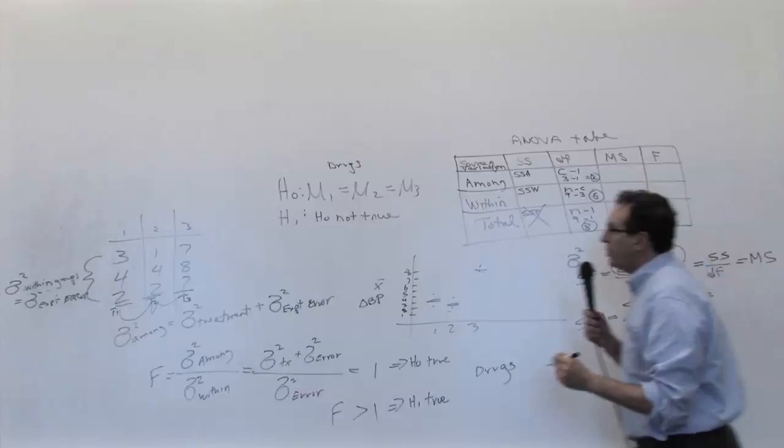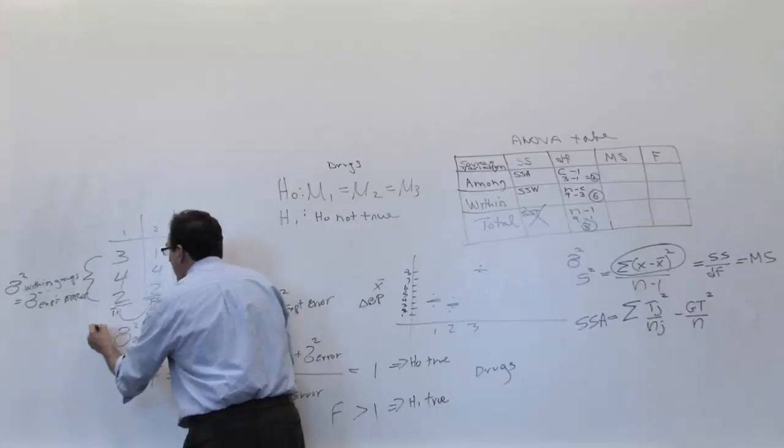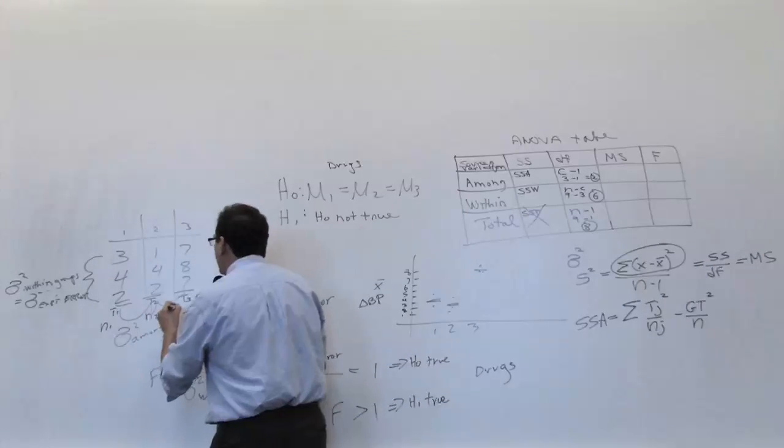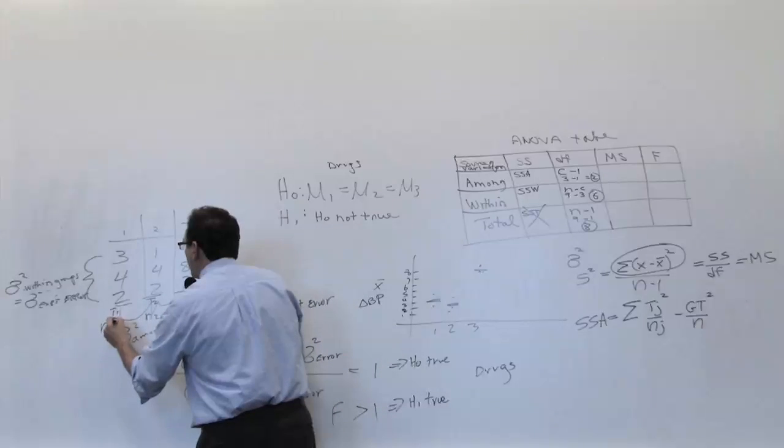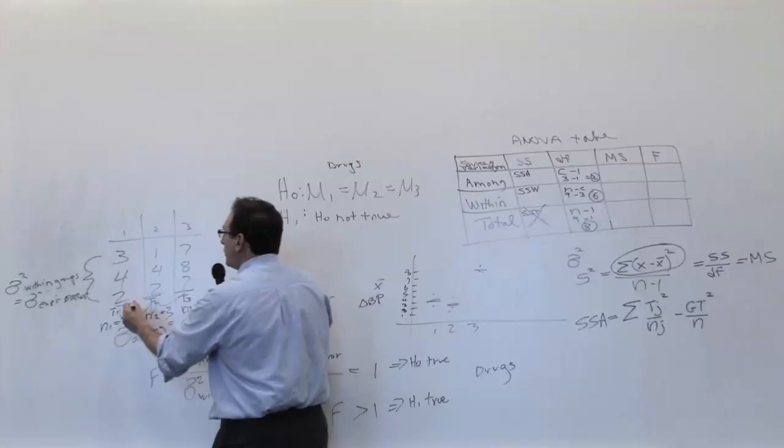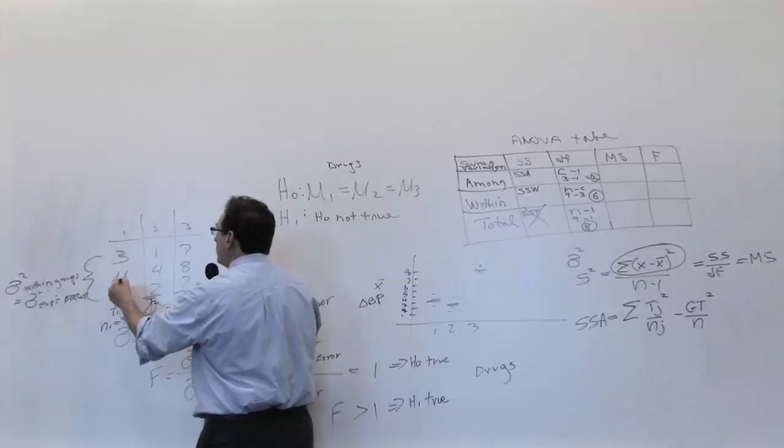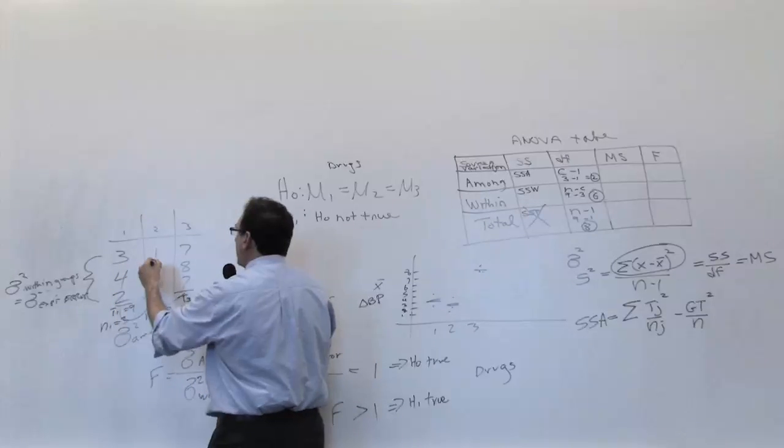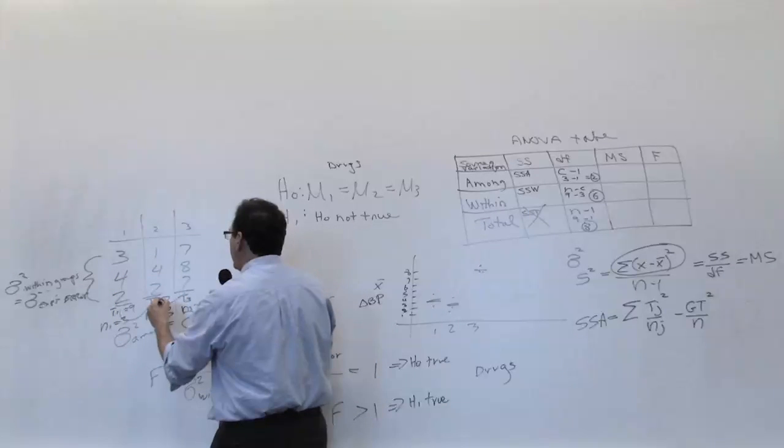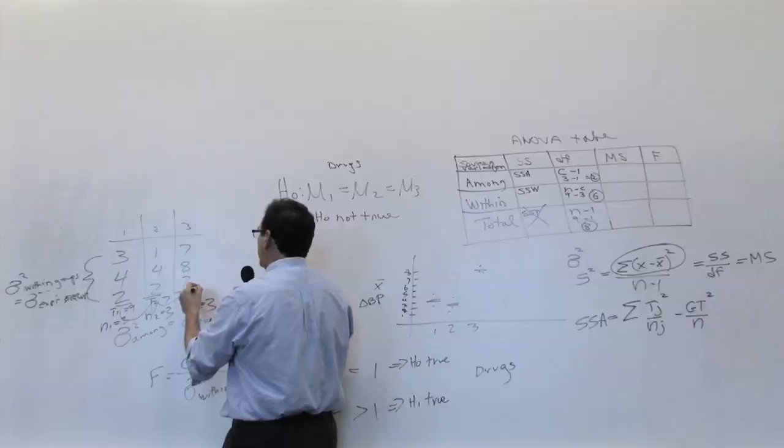So what is the total? What is the n1, n2, n3? Well, that's going to be 3, 3, and 3. What is the total of the first column? 3 plus 4 plus 2 is equal to 7. This is equal to 22.